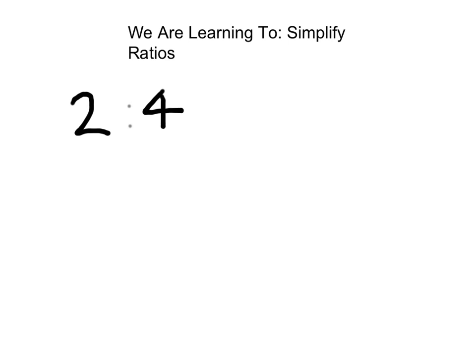When simplifying ratios we're trying to bring them down to the lowest form they can be, very much like simplifying fractions. So in this example we look for a number that goes into both ratio numbers. Dividing both two and four by two: two divided by two gives one, four divided by two gives two — so the ratio two to four in its simplest form is one to two.